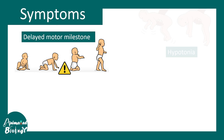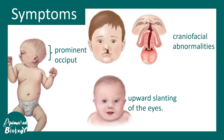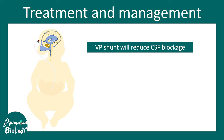Symptoms include delayed motor milestones, hypotonia, and motor coordination defects or ataxia. There can also be other signatures such as prominent occiput, craniofacial abnormalities like cleft palate, and upward slanting of the eyes. However, these are variable and not present in all patients.